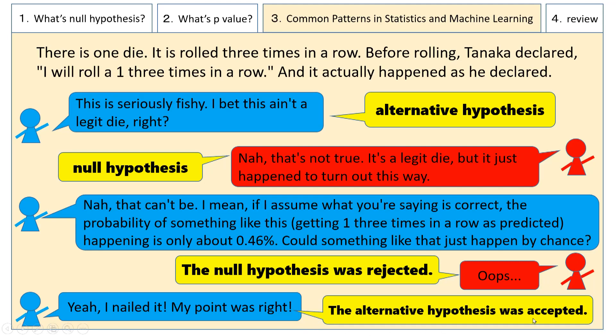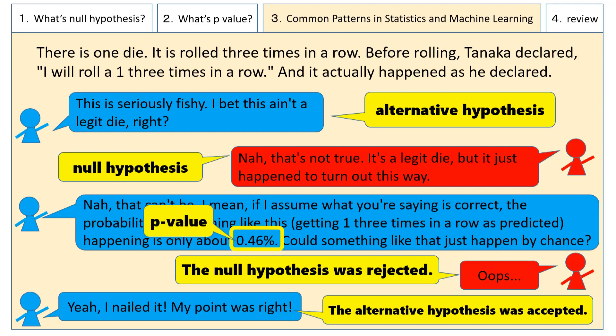Now, look at this number. John says, "If the null hypothesis is true, the probability of something like this happening is only about 0.46%. Could something like that just happen by chance?" This 0.46% corresponds to the p-value. The p-value represents the probability of observing an event as extreme as the one observed, assuming that the null hypothesis is true.